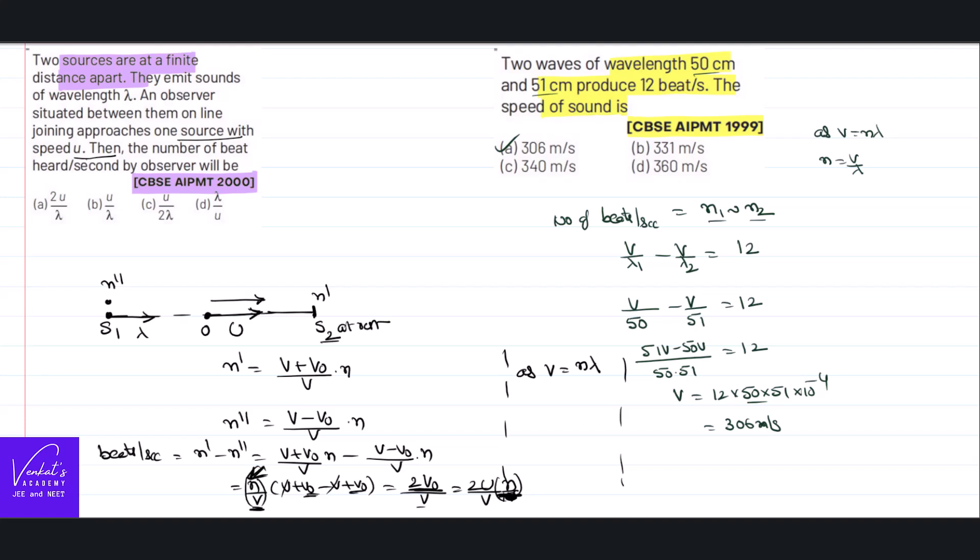As v equal to n lambda, in the place of n I can write v by lambda. That implies beats per second, the formula that we have got is 2u by v into n, but in the place of n I can write v by lambda. v and v will cancel, so 2u by lambda is the number of the beats per second. That's the answer for the problem.